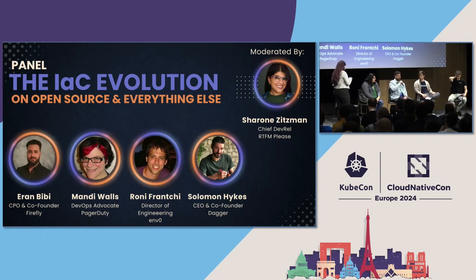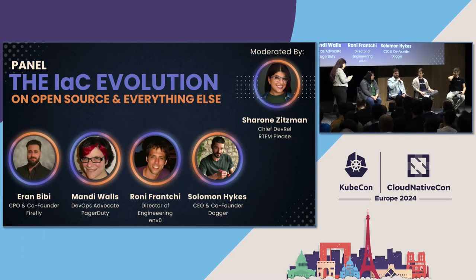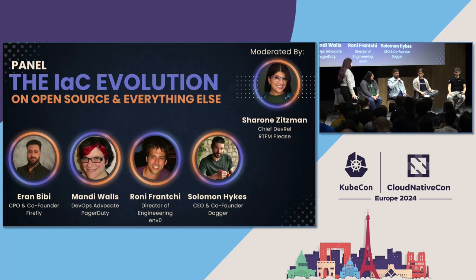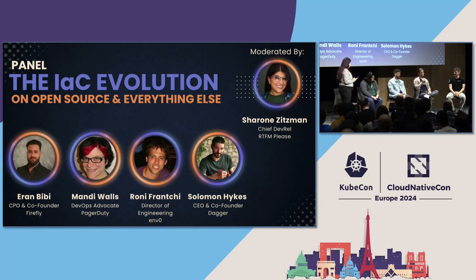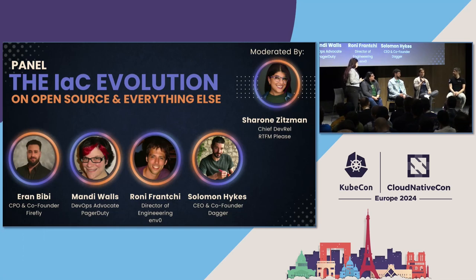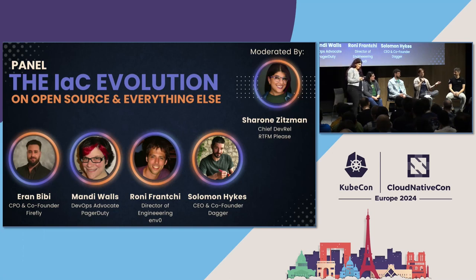My name is Aran Bibi. I'm the co-founder and chief product officer at Firefly. At Firefly, we are helping teams to get better control over the cloud and accelerate IAC adoption. I'll be here to share some of the insights we found in the report we recently released about the state of IAC. My name is Ronnie Franchi, I'm a director of engineering at NfZero. At NfZero, we help you govern, deploy, and scale your infrastructure as code — any kind of infrastructure as code — at scale and with confidence.